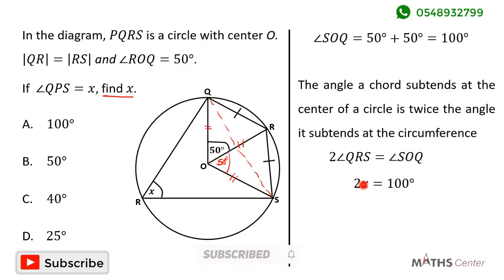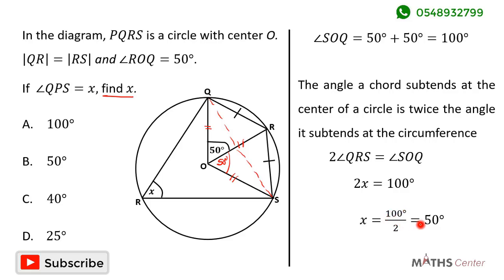So we have 2X equals 100 degrees. Dividing both sides by 2, X equals 100 divided by 2, which is 50 degrees. The value of X is 50 degrees. Looking through the options, the correct option is B.